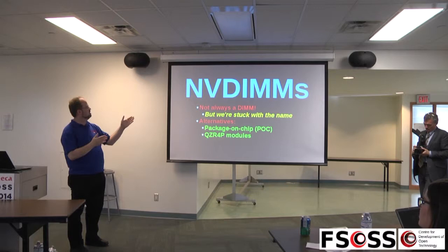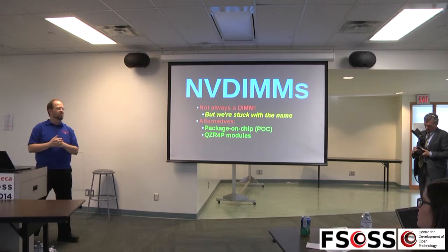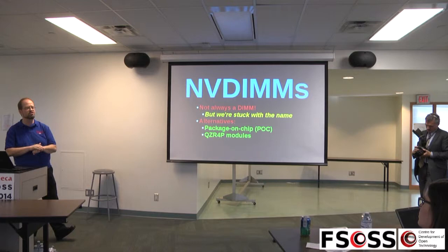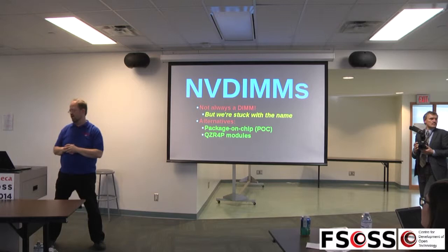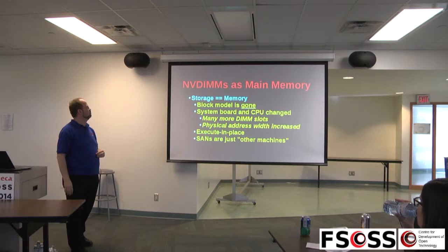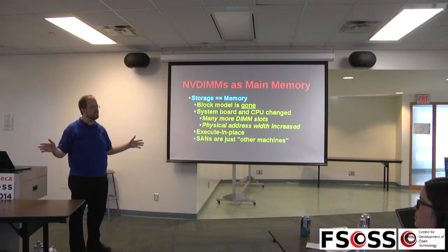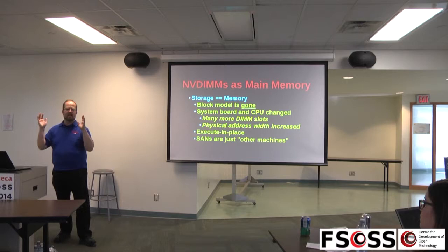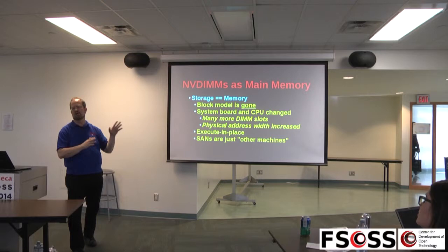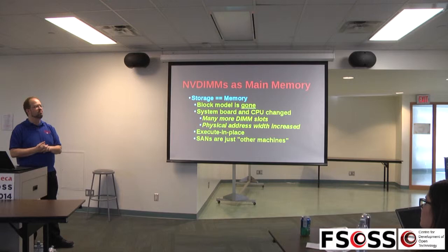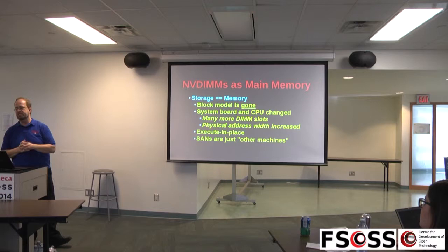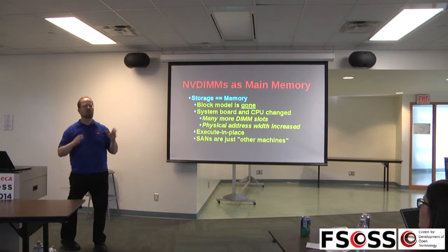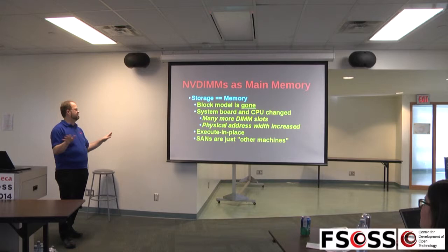Some interesting pieces came from these developments. NVDIMMs weren't always an actual DIMM — as time progressed we had package-on-chip (POC), package-on-package (POP), and a very small form factor rectangular module that became widely used. NVDIMMs as main memory was the real turning point: when storage and memory became the same thing. No longer necessary to chunk data into blocks and push them over a serial or parallel bus to external storage — you just wrote stuff to memory and expected it to be there permanently. The block model was gone: 4KB blocks, 1KB blocks, 512-byte sectors — completely wiped out.